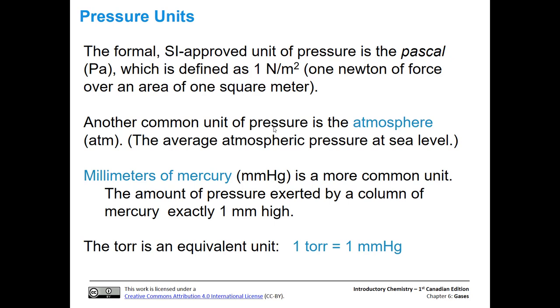Another common unit of pressure is the atmosphere, which is the average atmospheric pressure at sea level. This can also be described in millimeters of mercury, which is a much more common unit. That's the amount of pressure exerted by a column of mercury that's exactly one millimeter high.